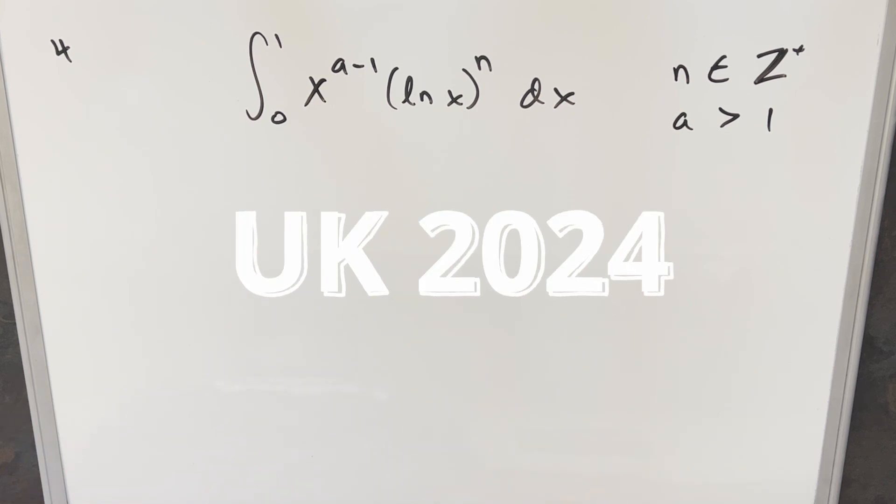Okay, we have another integral here today. This one's from the UK Integration B 2024, number four. We have the integral from zero to one, x to the a minus one times natural log x to the n dx. And we have these conditions over here. We want n to be a positive integer and we want a to be greater than one.